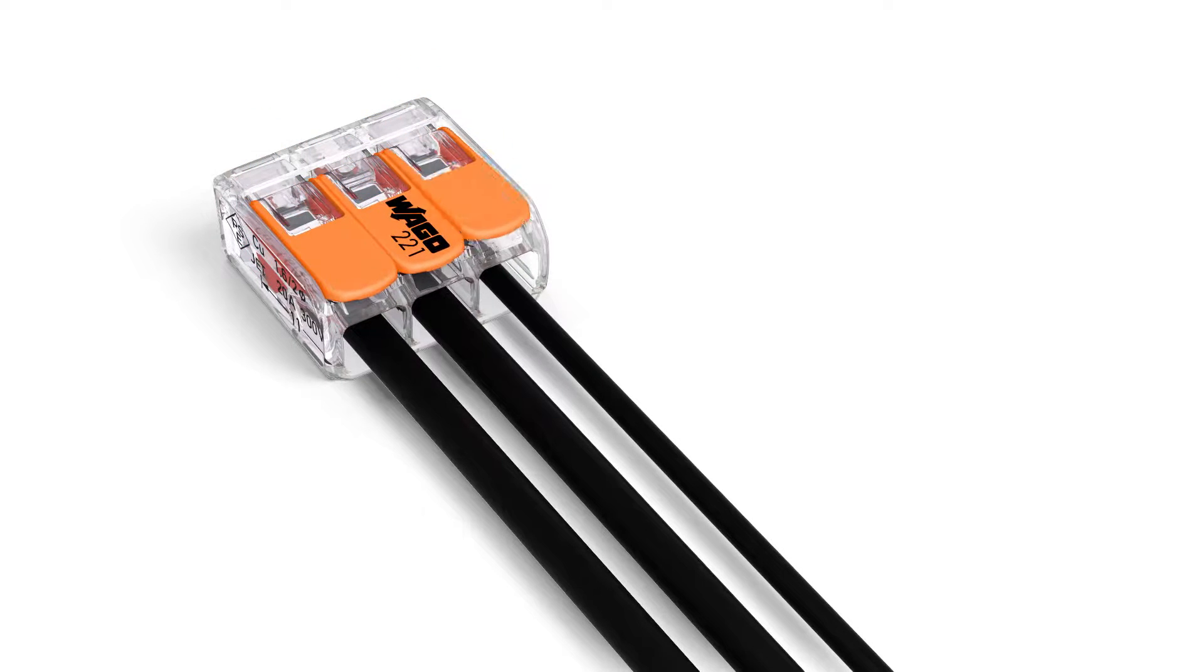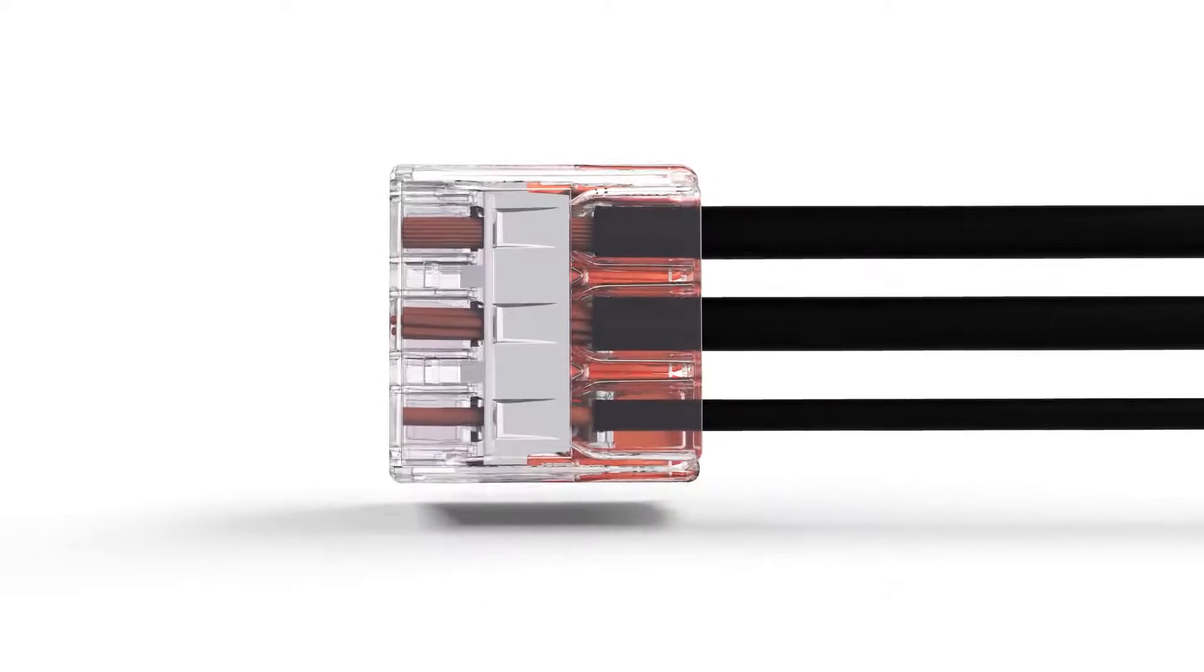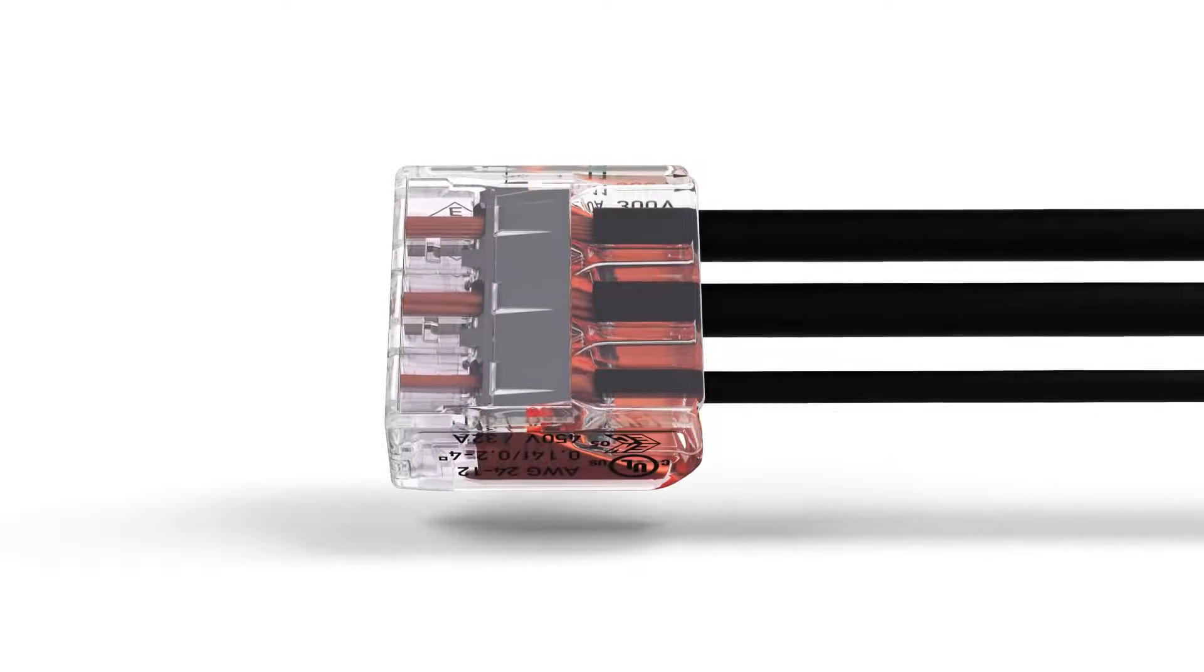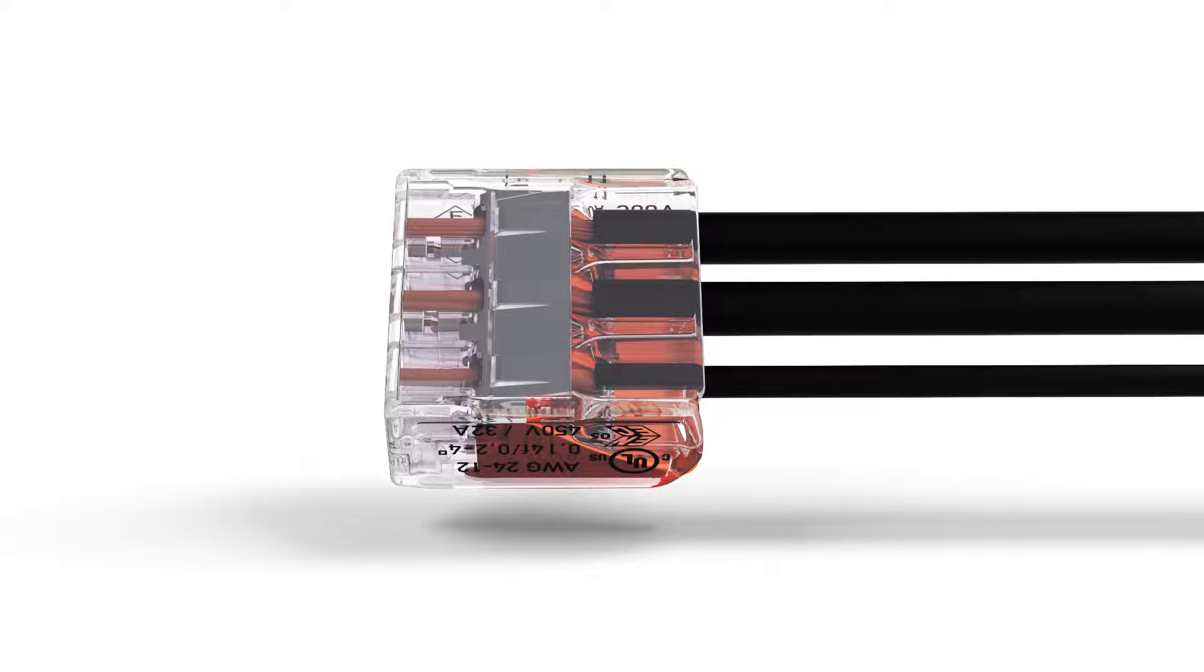The transparent housing enables visual inspection of the correct conductor position, providing a clear view of conductors that have not been inserted far enough or that have not been stripped to the proper length.